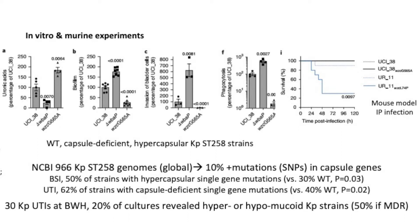You can see that if it was a capsule-deficient strain, it had less ureonic acid, and if it was a hypercapsular strain, it had more ureonic acid — so they had the strains correct. Looking at panels B and C, they looked at biofilm formation and the capacity of the strains to invade bladder cells in vitro. They identified that the capsule-deficient strains were actually better at biofilm formation and better at invading bladder cells compared to the hypercapsular strains.